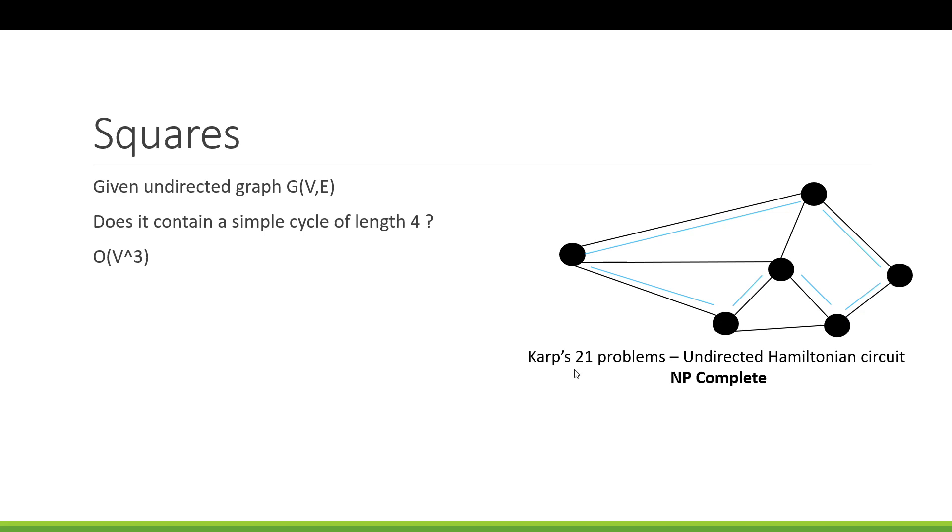And essentially what this really means is that this boils down to Karp's 21 problems, undirected Hamiltonian circuit, which is an NP-complete problem. It cannot be solved in polynomial time. And so I just wanted to motivate the fact that the author is asking for a length of 4 cycle, a simple cycle of length 4, but this is a complicated problem when you try to generalize this, and it becomes NP-complete.